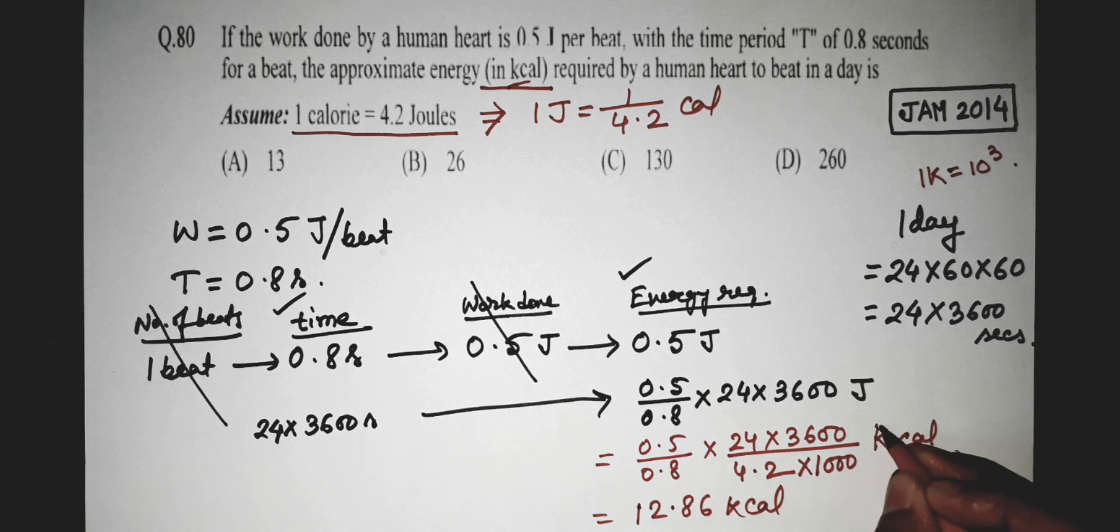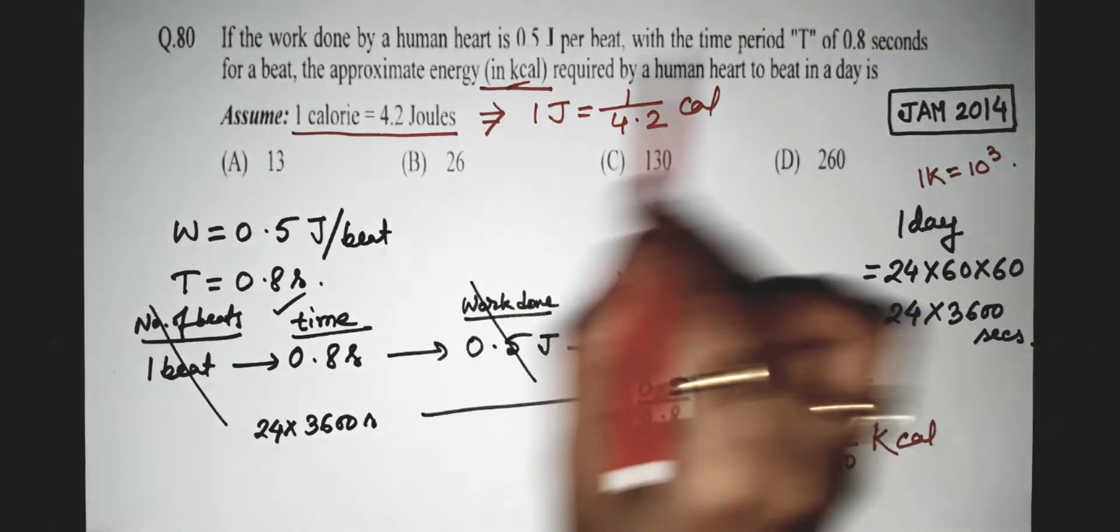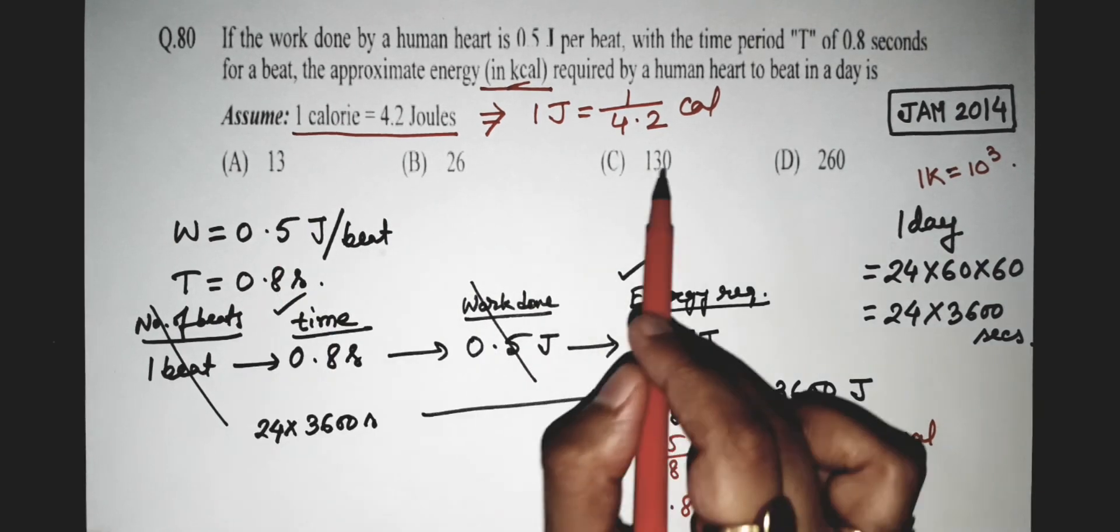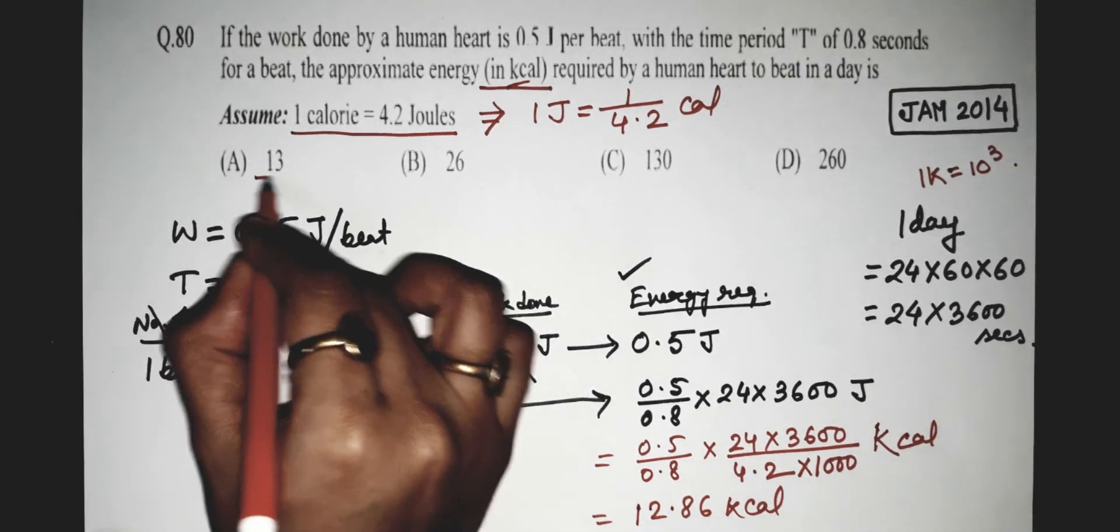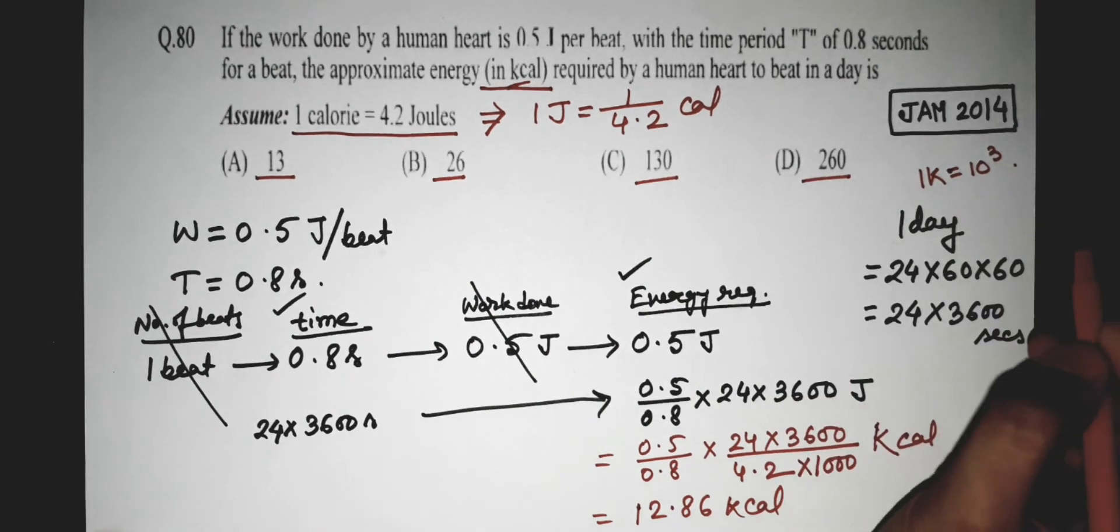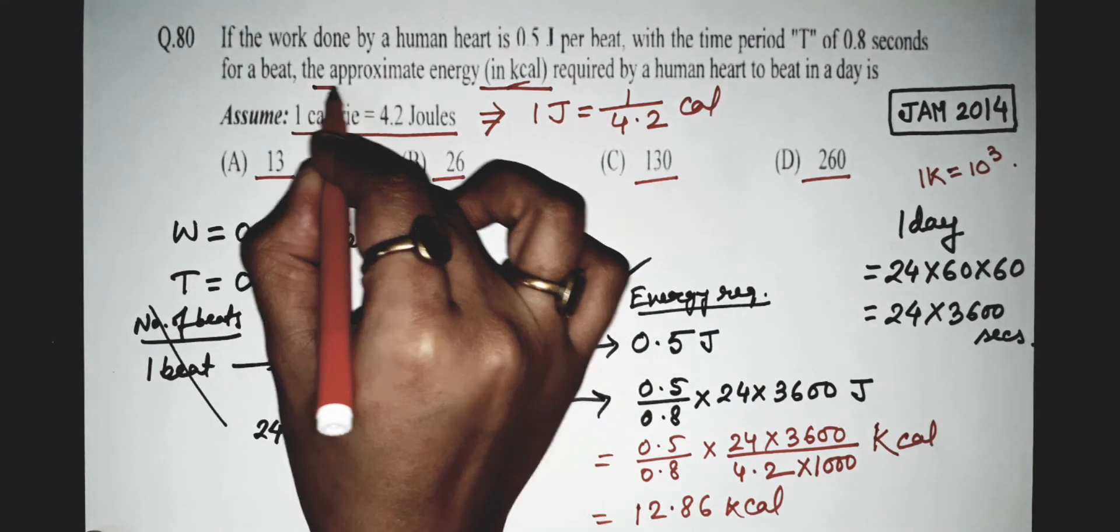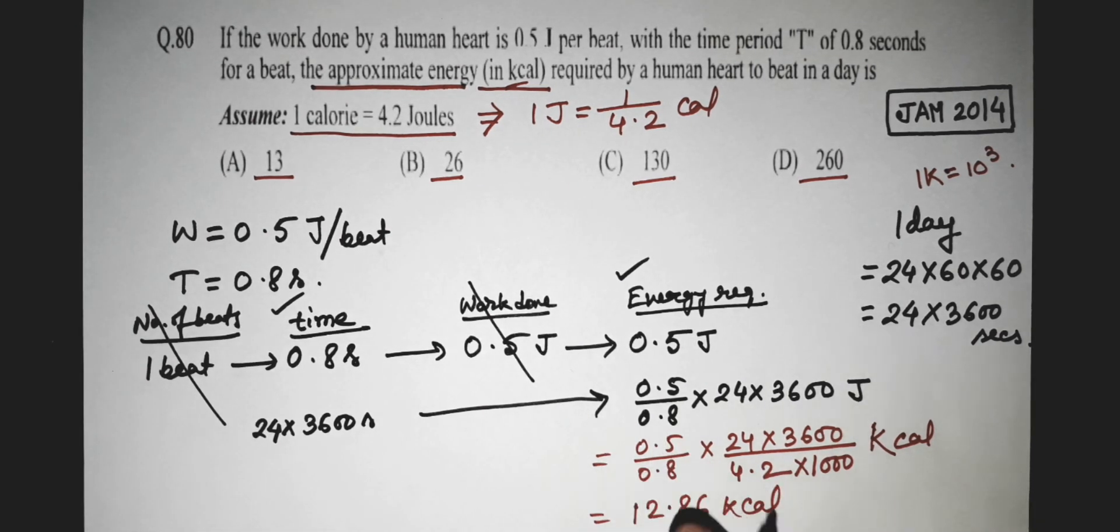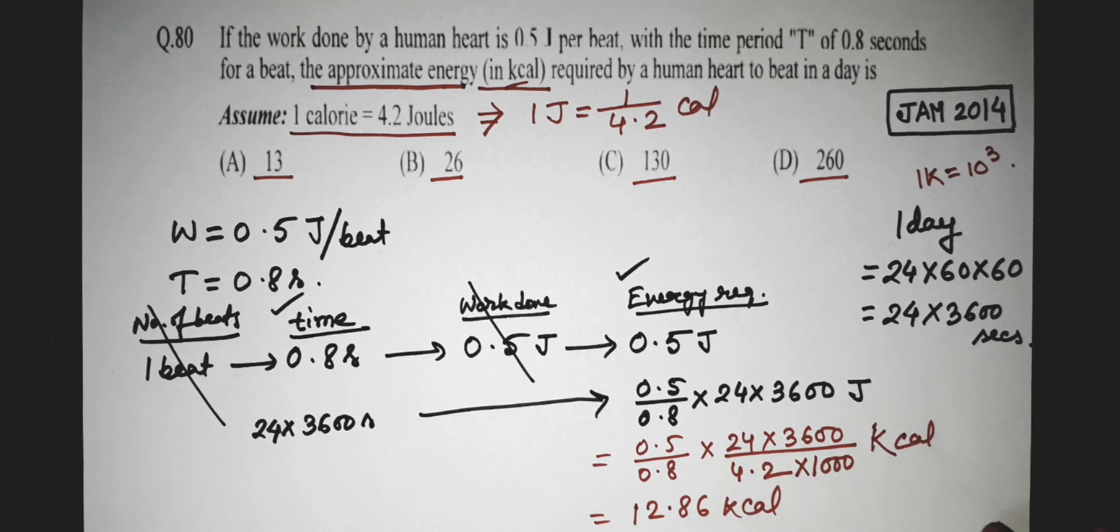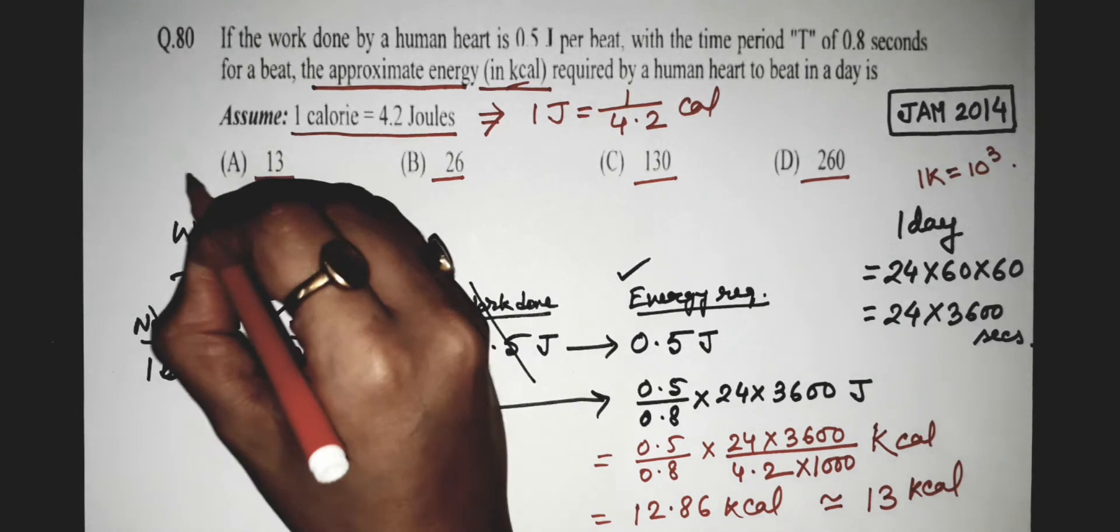So the answer is 12.86 kilocalorie. But notice that in this question, the given options do not include 12.86. Here the options are 13, 26, 130, and 260. In the question, see this: we are asked to calculate the approximate energy. So we don't need to calculate the exact energy, but the approximate energy. So the nearest value to 12.86 kilocalorie is, of course, 13 kilocalorie. So our correct answer is option A, 13.